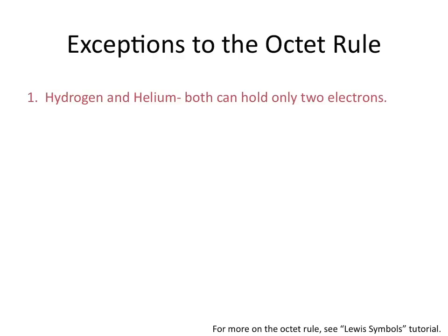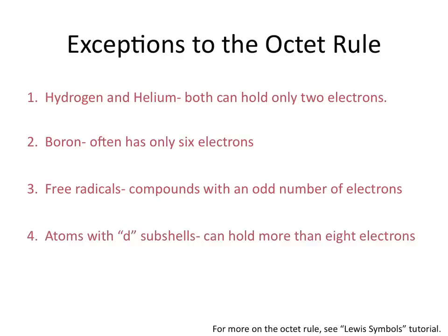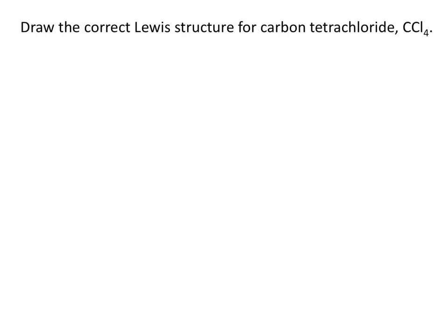The first exception is that hydrogen and helium both have their valence shells filled with only two electrons, so they don't need a full octet. The second exception is that boron often only has six electrons — an atom with less than an octet. You might also run into free radicals, which are compounds with an odd number of electrons, making it impossible for every atom to have an octet. Finally, atoms with d subshells in the third row of the periodic table and lower can hold more than eight electrons, so those atoms can violate the octet rule by having more than eight electrons in their valence shell.